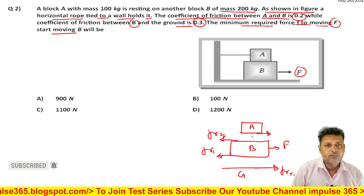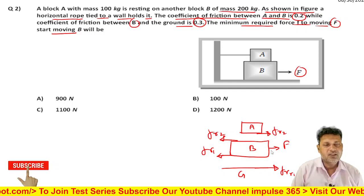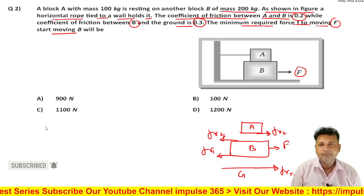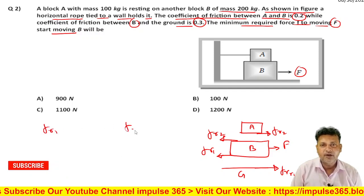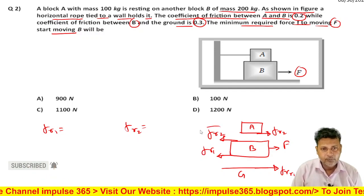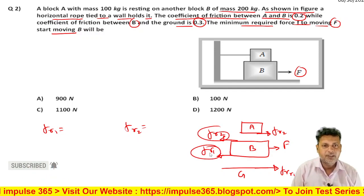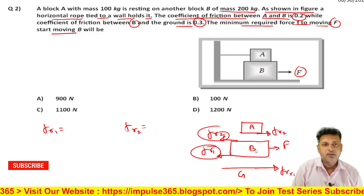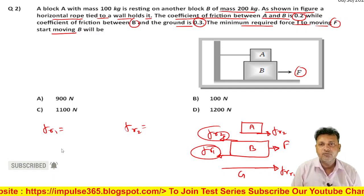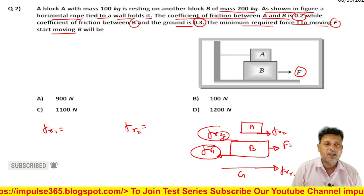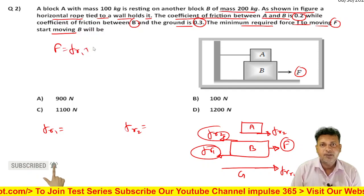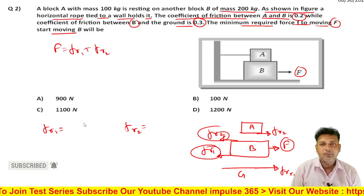Block A भी B को पीछे की तरफ खीचेगा, FR2 इसको कहो। तो total friction force जो B block को left direction में खीचेंगे, वो FR1 और FR2 हैं। उसके बराबर force लगना चाहिए - it means F = FR1 + FR2 के बराबर लगना चाहिए।